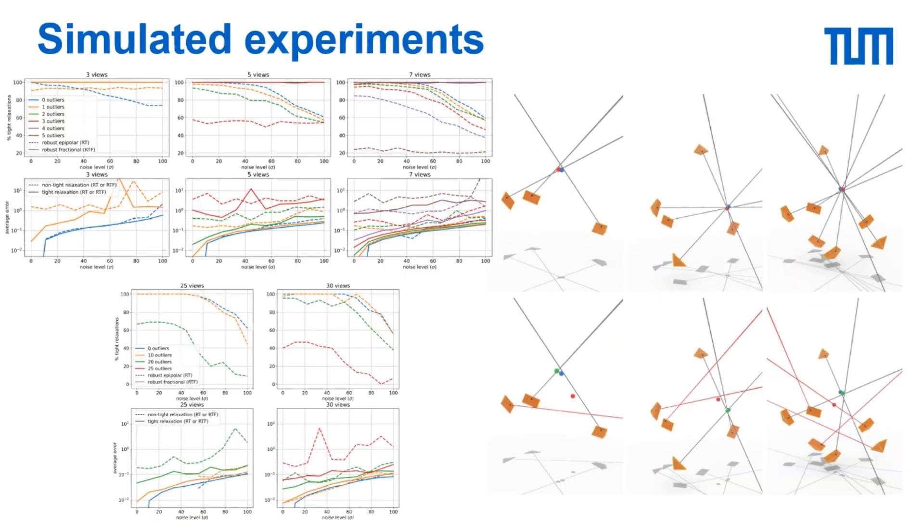To test our methods we simulate triangulation problems by placing camera views uniformly at random on a sphere of radius 2 with the ground truth point close to the origin. We run the experiments for 3, 5, and 7 views for both methods and for 25 and 30 views for the epipolar method. We leave out the fractional method in the latter case due to the large number of constraints causing memory issues.